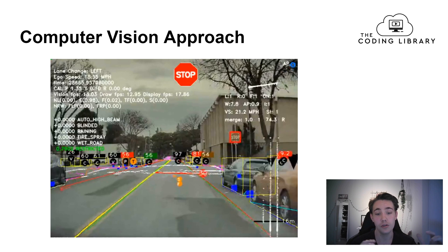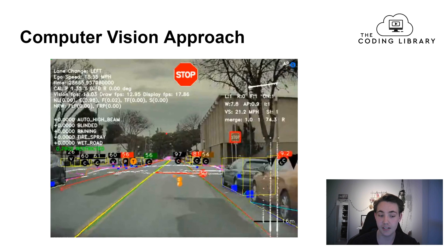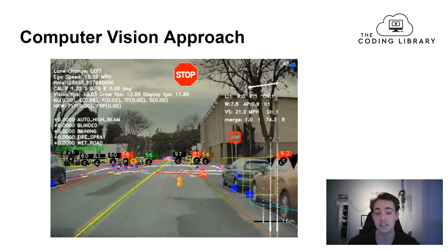Tesla's computer vision approach performs many different detections on the frames. We can see examples of what the camera sees when driving in full self-driving mode: it detects all relevant obstacles around the car, detects road lane lines, and extracts other information from the images. We get 3D bounding boxes around detected cars, and at the back of each vehicle there's a dot indicating the vehicle's rear — these detections also come from the radar.